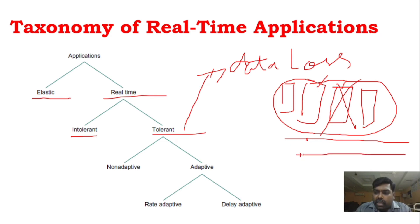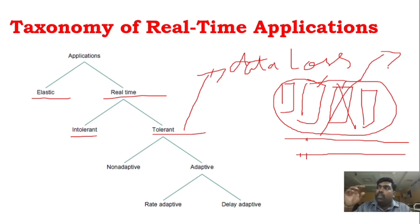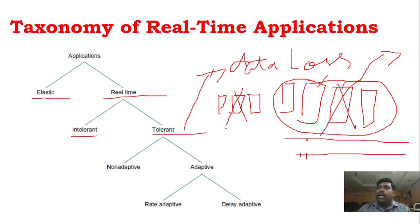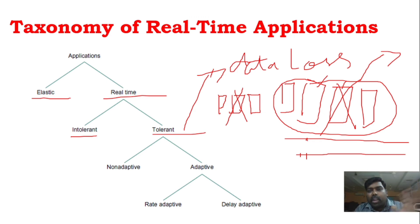If a small packet is lost in audio, there is no significant problem — it is tolerant. But if you take a robot arm application, each packet contains an instruction. If a packet carrying a command to the robot arm is lost, the arm stops receiving that command and the operation fails completely. This is intolerant to data loss. So data loss can be separated into tolerant and intolerant categories.